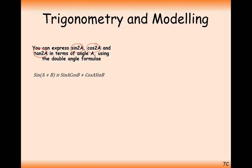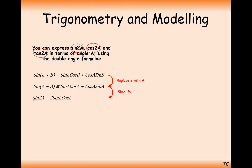We can derive these formulas by taking the formula from the formula booklet: sine a plus b equals sine a cos b plus cos a sine b. To get two a's inside our bracket, we replace the b's with another a. So on the left-hand side we get sine a plus a, which is sine 2a, and on the right-hand side both expressions are equivalent giving us 2 sine a cos a. This is a formula to remember — it doesn't get given to you in the formula booklet, but you can work it out.